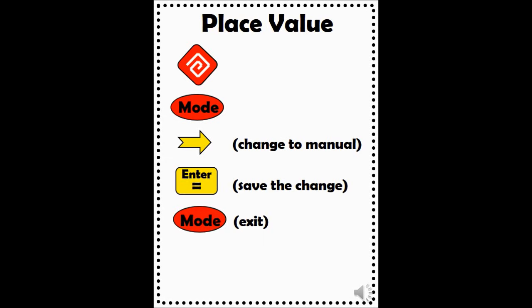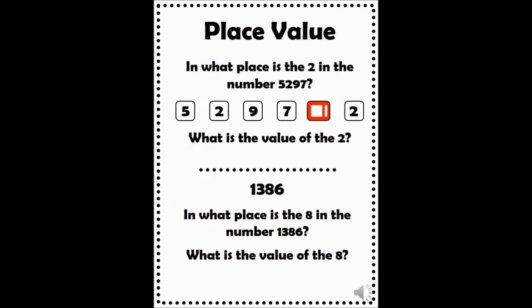Now you are in the problem solving setting. Enter the number 5297 into your calculator. Press the red place value key toward the top of your calculator. Then press the number 2 and observe what happens. You should have noticed that the calculator tells you the place the 2 is in and the 2's value. This function helps you answer two questions. Question 1: in what place is the 2? The 2 is in the hundreds place. Question 2: what is the value of the 2? The value of the 2 is two hundreds, or 200.